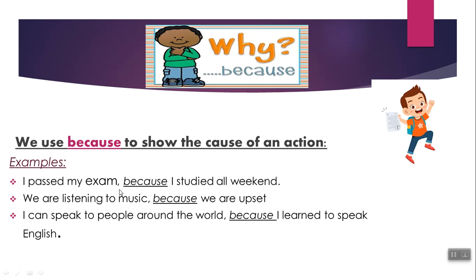I passed my exam — something happened. Why did you pass? Tell me the reason. Because I studied. So, the reason or cause comes after the conjunction 'because'. Now we see that two sentences are connected using 'because', or 'so', or 'and', or 'but'.